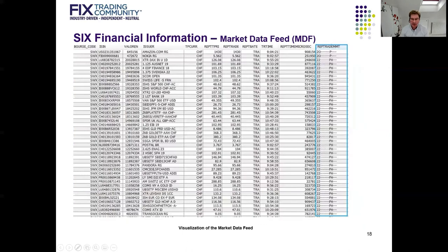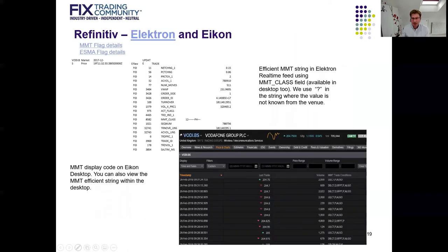Also shown is a representation of a new trade report published on Bloomberg's consolidated market data feed BPIPE. If a BPIPE subscriber chooses to do so, they can receive the MMT trade flags on trade reports where the trading venue has made them available to Bloomberg. In this example Bloomberg is using the display codes representation of MMT, while other services may use the efficient encoding representation. The Ion Markets or Fidesa display service also allows the user to see trades described in terms of MMT trade flags, as illustrated on the current screen grab of the Fidesa time and sales facility.